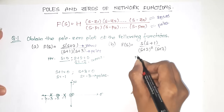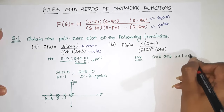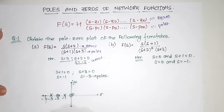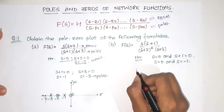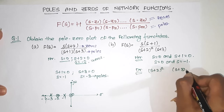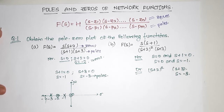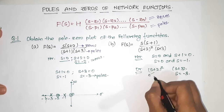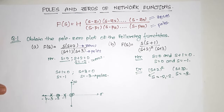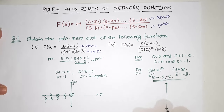Let us solve one more question. In the numerator, s = 0 and s+1 = 0, so s = 0 and s = -1 are the zeros of the function. In the denominator we have (s+2)² and (s+3), giving us two terms.